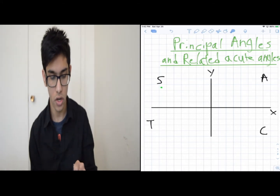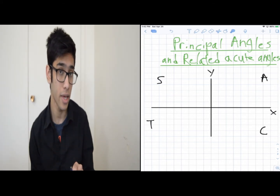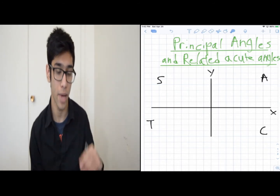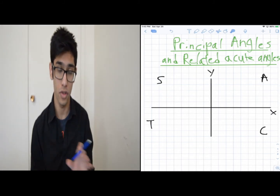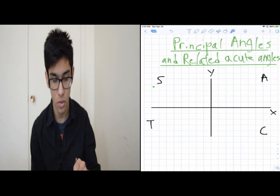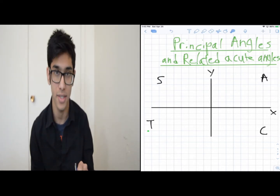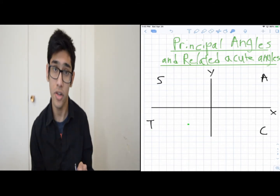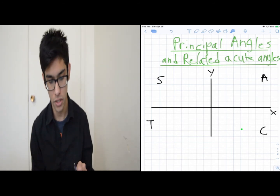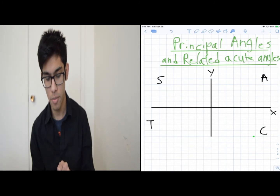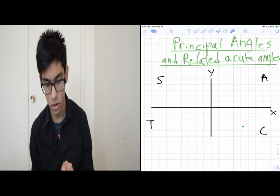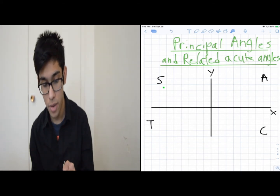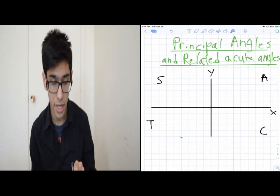In quadrant two (S), the only trigonometric ratio that is positive is sine — cosine and tangent are negative. In quadrant three (T), only tangent is positive. In quadrant four (C), only cosine is positive. So: all positive in Q1, only sine in Q2, only tangent in Q3, only cosine in Q4.